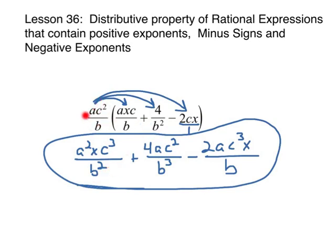Then I'm going to do the same thing. I'm distributing this over this, and I'm going to get 4AC squared over B times B squared, which is B cubed. And then finally minus. Now remember, this is a whole number here. It's not written as a fraction, but we can make it a fraction. So 2AC cubed X over B times 1 is B. This would be your final answer to a problem like this.